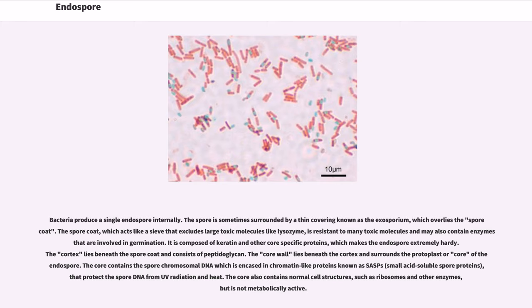The spore is sometimes surrounded by a thin covering known as the exosporium, which overlies the spore coat. The spore coat, which acts like a sieve that excludes large toxic molecules like lysozyme, is resistant to many toxic molecules and may also contain enzymes that are involved in germination. It is composed of keratin and other core-specific proteins, which makes the endospore extremely hardy.